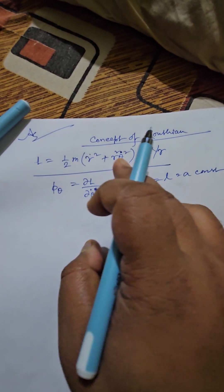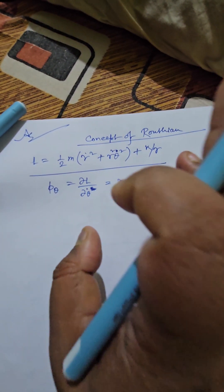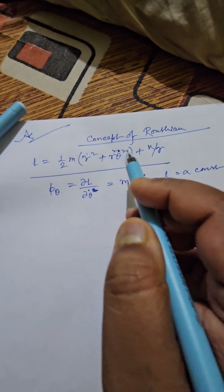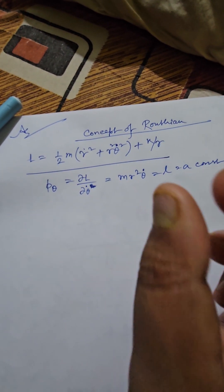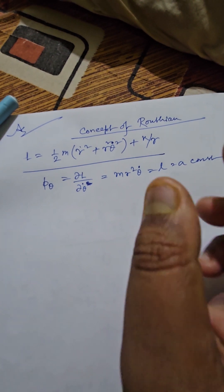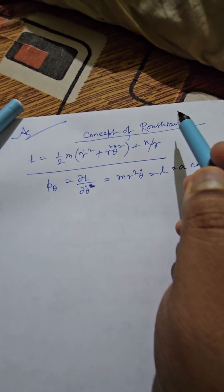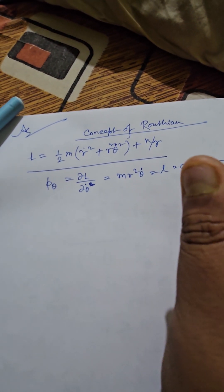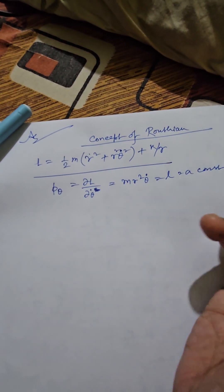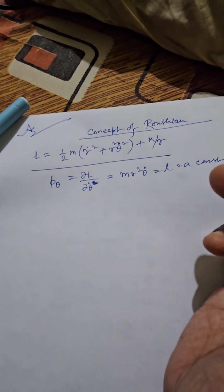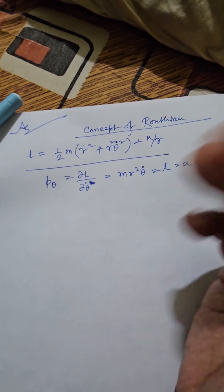In this expression the entire structure does not contain theta, but in the Lagrangian formulation you cannot avoid it because to find the value of theta-dot you need to consider theta. So we discuss a procedure where we can omit ignorable coordinates, and that procedure is known as the construction of the Routhian.